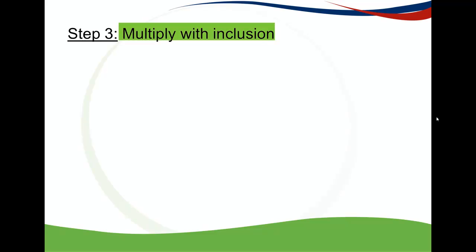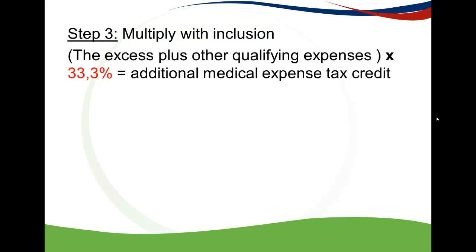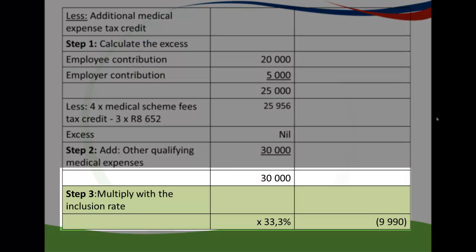Step three is to multiply by the inclusion rate. This is simpler than Part 1, which required applying a limitation that can be a little confusing. Here, you just take your excess plus your other qualifying expenses and multiply by 33.3%, or divide by 3, to get the additional medical expense tax credit. So we take 30,000 Rand and multiply by 33.3%, giving an additional medical expense tax credit of 9,990 Rand.